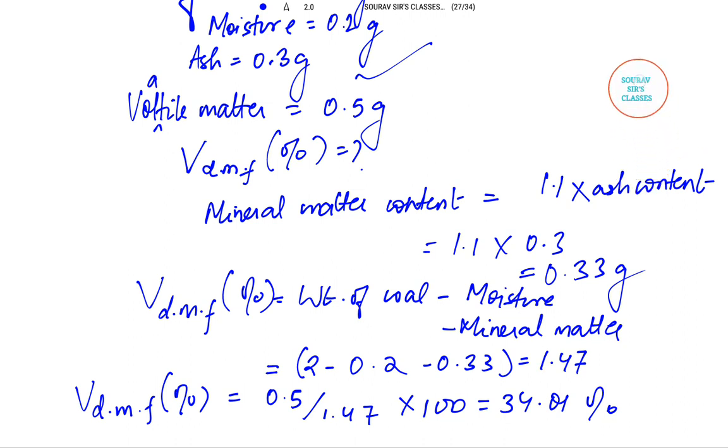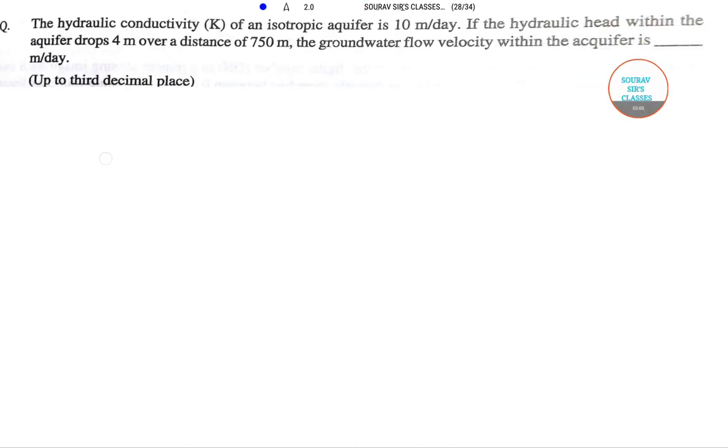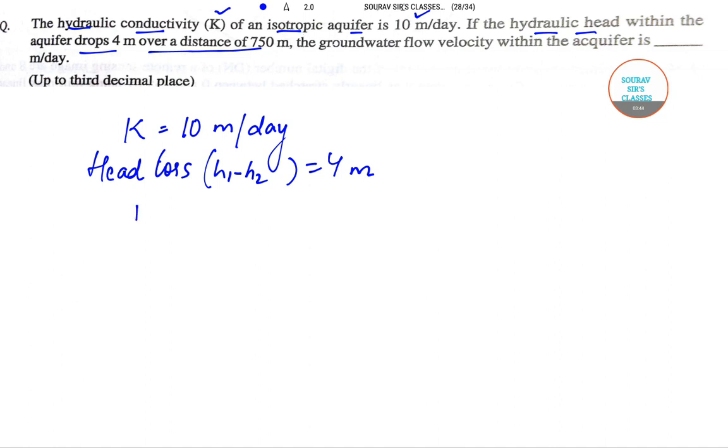Moving on to the next question. The hydraulic conductivity K of an isotropic aquifer is 10 meters per day. If the hydraulic head within the aquifer drops to 4 meters, so K is given to be 10 meter per day, H1 minus H2 is 4 meters.